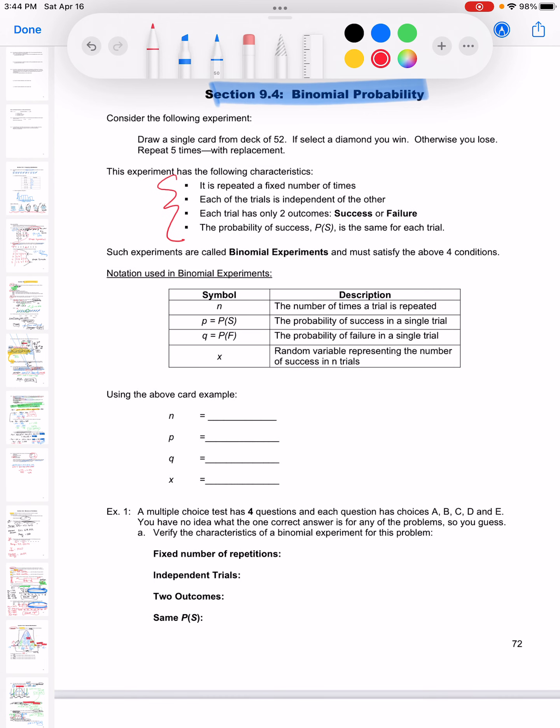When we have each trial, we either have to get it or not. We have to have success or failure - there's no middle ground. And last, the probability of success has to stay the same. So kind of going back to that dice, the probability of rolling a five is one-sixth. Every time I roll the dice, the probability stays the same - it's one-sixth.